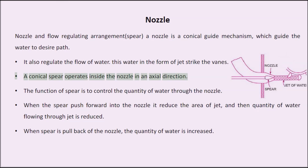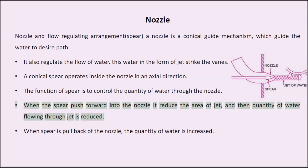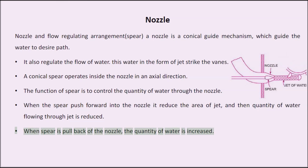A conical spear operates inside the nozzle in an axial direction. The function of the spear is to control the quantity of water through the nozzle. When the spear is pushed forward into the nozzle, it reduces the area of the jet and the quantity of water flowing through the jet is reduced. When the spear is pulled back, the quantity of water is increased.